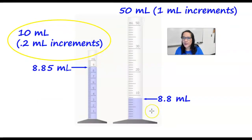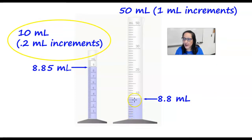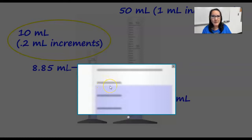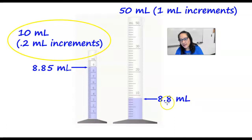With the 50-milliliter graduated cylinder, reading it gives 1, 2, 3, 4, 5, 6, 7, 8. Then estimating between the lines — it's between 8 and 9, not quite at 9, so about 8.8. This is accurate only to the tenths place.